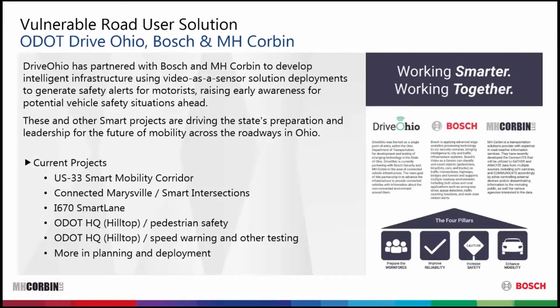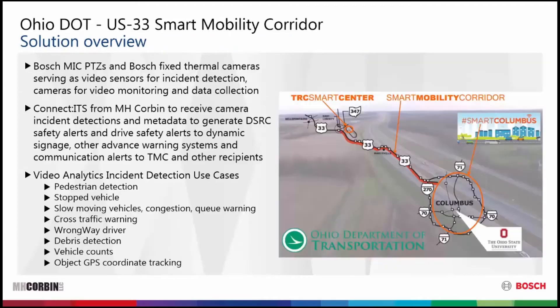Some great examples of how video-as-a-sensor can be deployed are taking place in Ohio. Our partnership with the DriveOhio team from Ohio DOT, as well as MHCorbin, enables true solutions on the roadway where cameras are actively detecting potential safety issues, and then the MHCorbin box broadcasts out safety messages informing approaching drivers of potential safety issues ahead. One of the deployments is on the US-33 corridor, where cameras run as sensors on a couple of miles of the highway, installed with cameras and cabinets on the poles with our MHCorbin Connect ITS boxes.